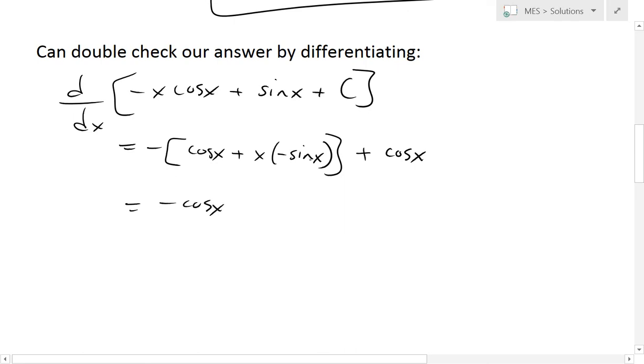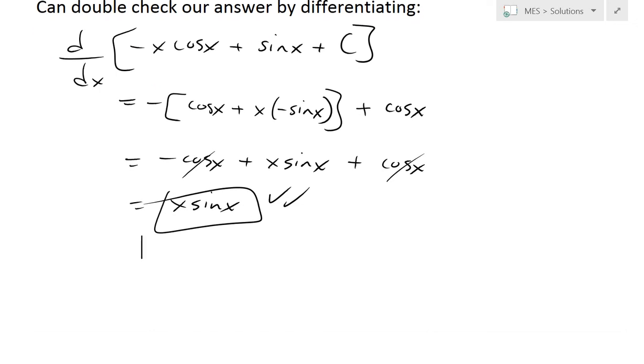This equals negative cos(x), put the negative inside, this becomes positive, x sin(x) plus cos(x). The cosines cancel and we're left with x sin(x). We've proven that the answer is correct, because this is exactly what we started off with.